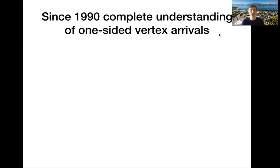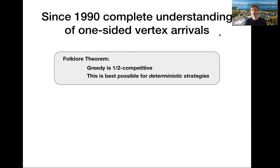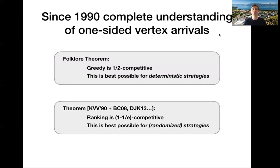So to summarize, since the 1990s, we have had a complete understanding of one side vertex arrivals. If we want to have deterministic strategies, the greedy is optimal. It achieves a competitive ratio of one half. And if we allow for randomization, the ranking algorithm is optimal and it achieves a competitive ratio of one minus one over e.